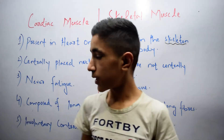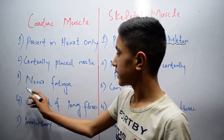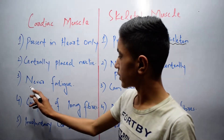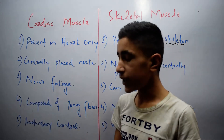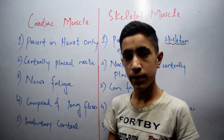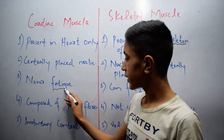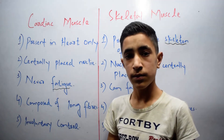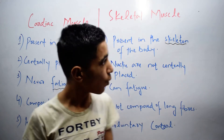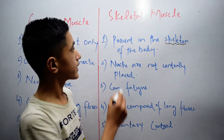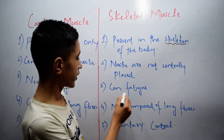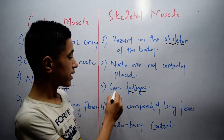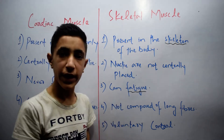The third difference is that cardiac muscle can never fatigue — fatigue means tiredness — while skeletal muscle can fatigue; skeletal muscle can experience tiredness.